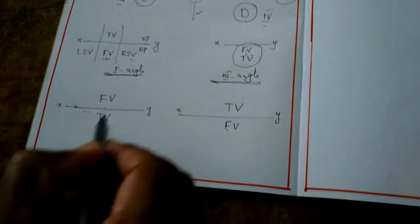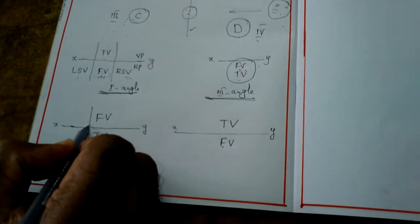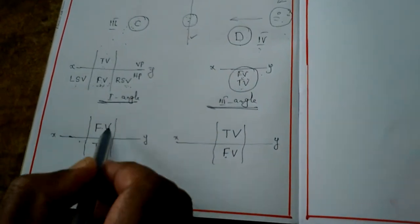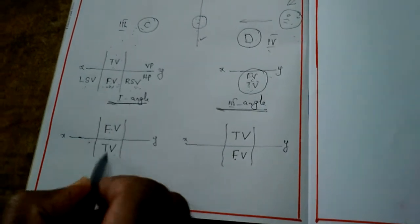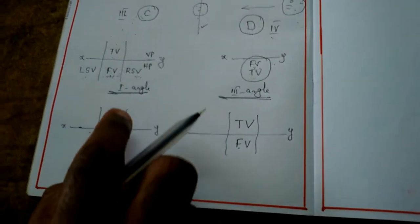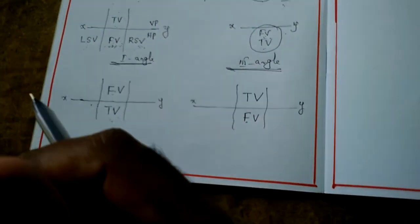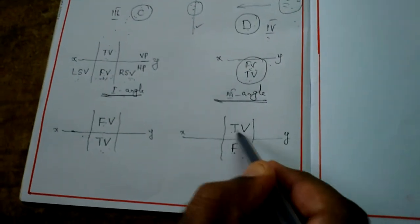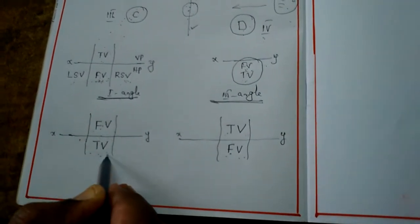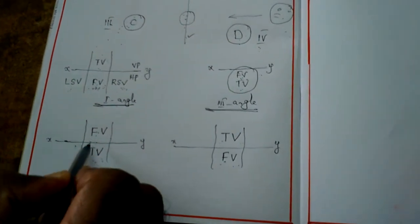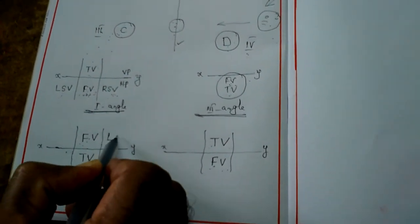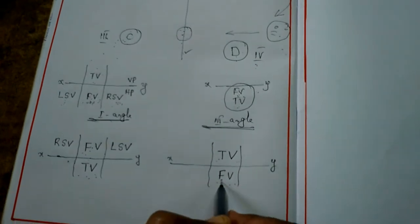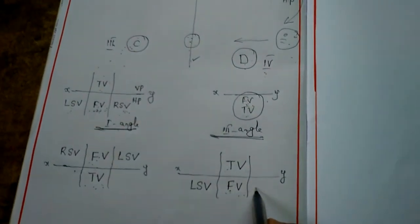Once you complete the front view and top view, you want to draw side views. We draw two lines because the front view and top view both have the same length. In first angle projection method, the left side view occupies the right side of the front view, and the right side view occupies the left of the front view. In third angle projection method, the left side view occupies the left of the front view and the right side view occupies the right of the front view.